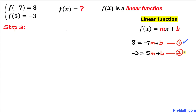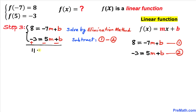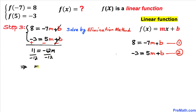We have now come up with two linear equations, representing a system of two equations. Let's solve this system using the elimination method to find the m and b values. We subtract equation 2 from equation 1, changing the signs accordingly: negative becomes positive, positive becomes negative. On the left, 8 plus 3 gives us 11, equal to negative 12m. The b terms cancel. Dividing both sides by negative 12, our m value turns out to be negative 11 over 12.